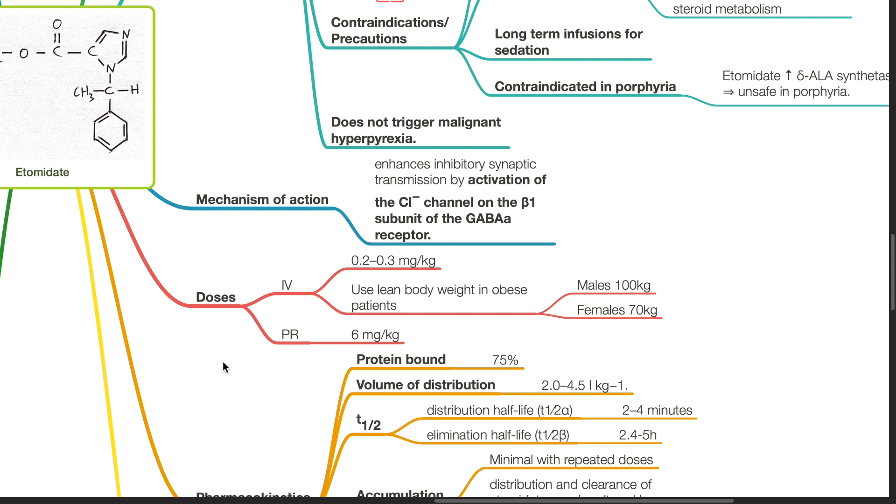Dosage of etomidate: the IV dose is 0.3 mg per kg. For obese patients, use lean body weight, which plateaus at 100 kg for males and 70 kg for females. Etomidate can also be used per rectum at 6 mg per kg.